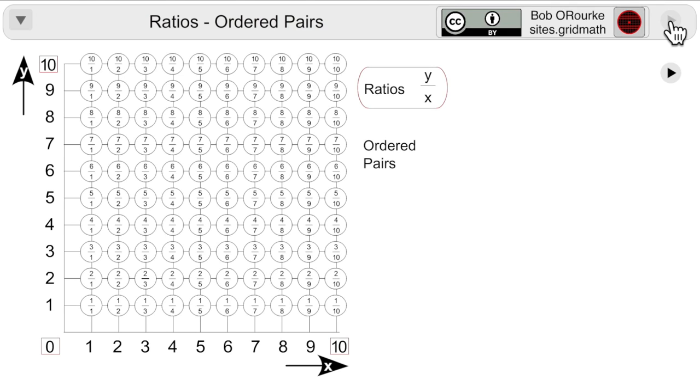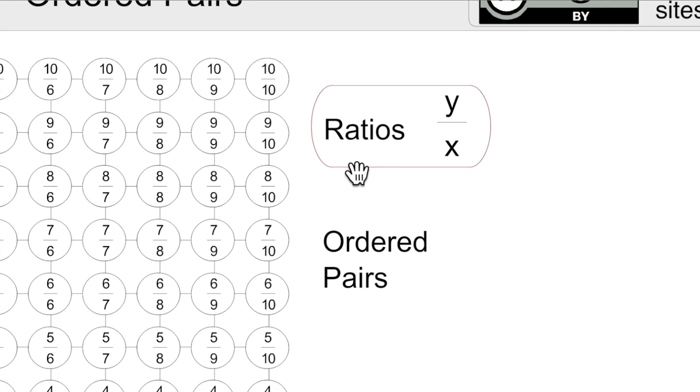Ratios and ordered pairs are shown this way. You really have to zoom in to be effective here. Ratios are shown first as Y over X. Ordered pairs are X comma Y.